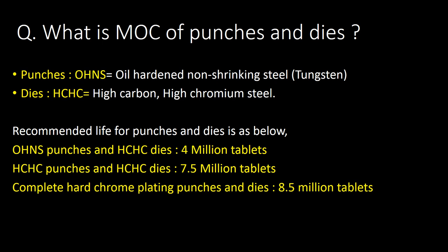What is the MOC of punches and dies? Punches are mainly made up of OHNx (oil hardened non-shrinking steel, i.e., tungsten) and dies are made up of HCHC (high carbon high chromium steel). Recommended life: for OHNx punches and HCHC dies — 4 million tablets; for HCHC punches and HCHC dies — 7.5 million tablets; and for complete hard chrome plating punches and dies — 8.5 million tablets.